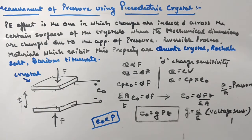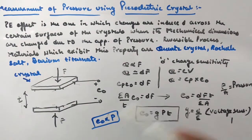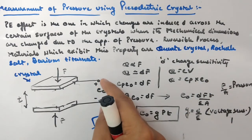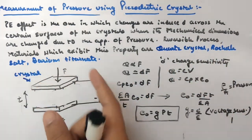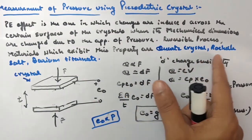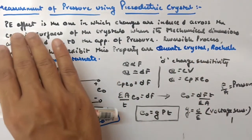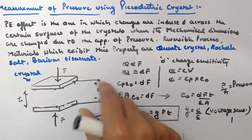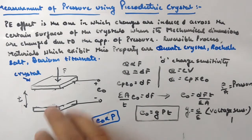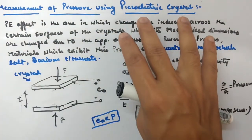The change in mechanical dimensions produces charges — that's the piezoelectric effect. It is a reversible process, meaning if you apply voltage across it, there will be a change in the mechanical dimensions. The materials which exhibit this property are quartz crystal, Rochelle salt, and barium titanate. In these crystals, if you apply force, you will get charges or voltages across it, which is one way to measure pressure.